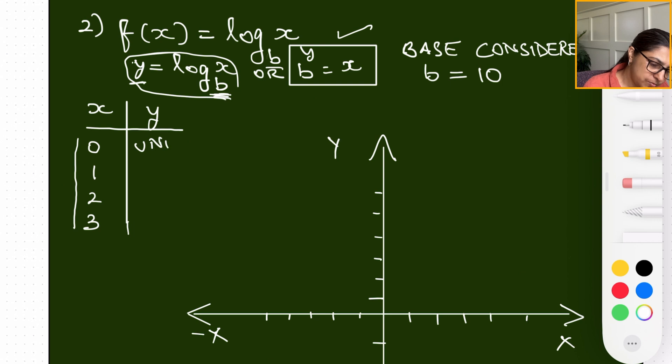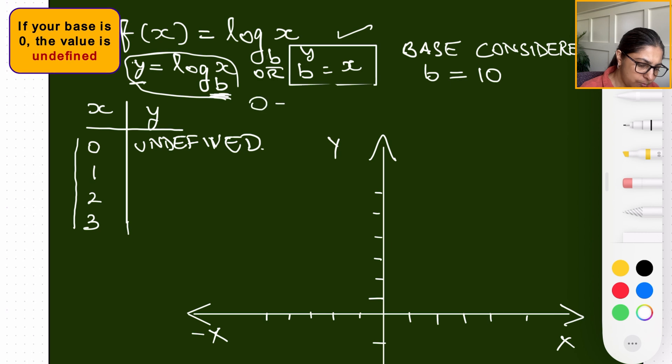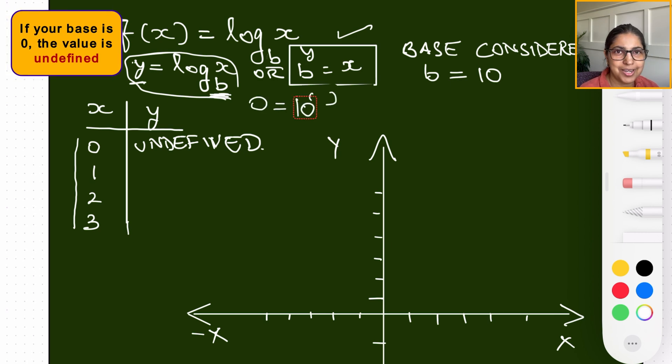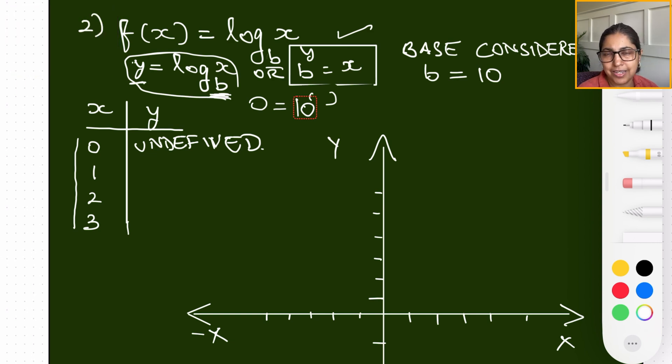As you can see on the screen, the x values I have written for this function are only going to be zero, one, two, three. Actually this is going to be undefined. Why? Because if your x value is zero, meaning what will you raise the base 10 to get a zero.